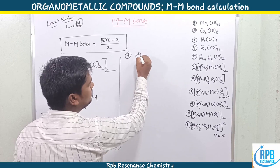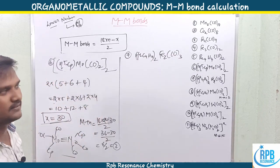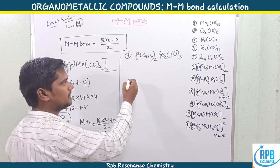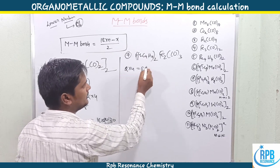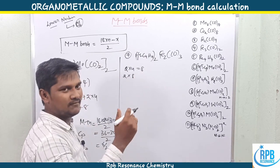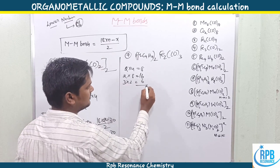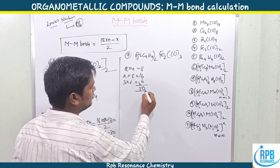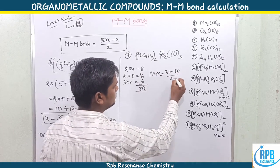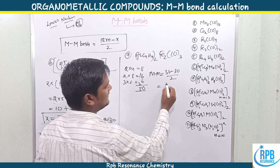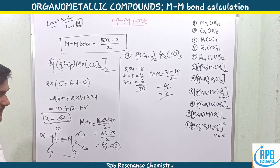Example 7: [η⁴-C₄H₄Fe(CO)₂]₂. η⁴ contributes 4×2 = 8 electrons total from two units; two Fe atoms give 2×8 = 16 electrons; three carbonyls per unit — wait, two units give total of 2×(3×2) = 12 electrons from carbonyls. Total electrons = 8 + 16 + 12 = wait: per unit: 8 + 8 + 6 = 22; but using the formula for n=2 total x = 30. Metal-metal bonds = (36 − 30) / 2 = 3. Three metal-metal bonds are observed here as well.